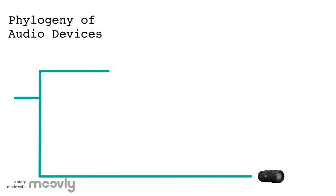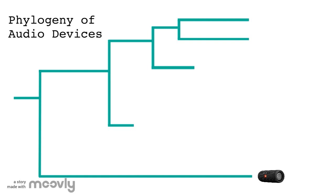Earbuds were the next to diverge from over-ear headphones as they developed an even smaller profile. Following the over-ear lineage, we see that wireless headphones were the next to emerge. Each of the over-ear lineages went on to evolve once more, both evolving to include headphones with extra buttons and those with microphones.